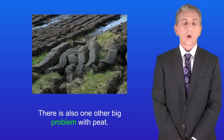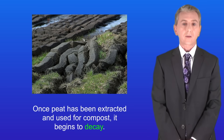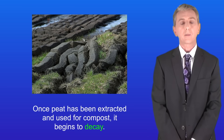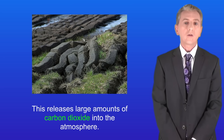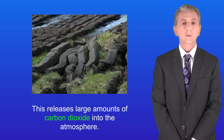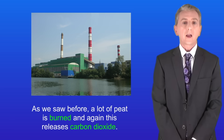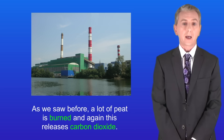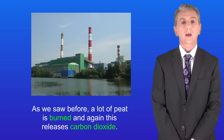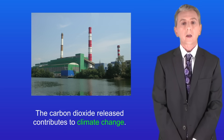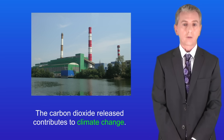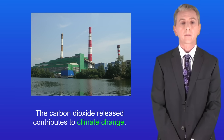Now there's also one other big problem with peat. Once peat has been extracted and used for compost it begins to decay, which releases large amounts of carbon dioxide into the atmosphere. A lot of peat is also burned, and again this releases carbon dioxide. The carbon dioxide released contributes to climate change.